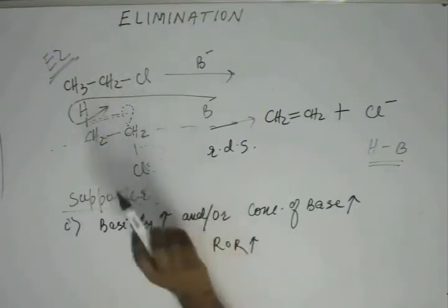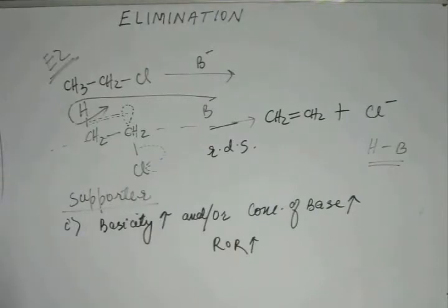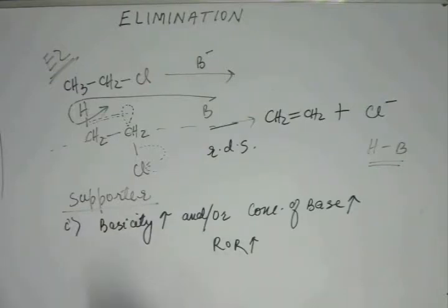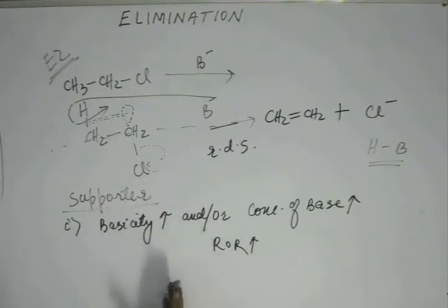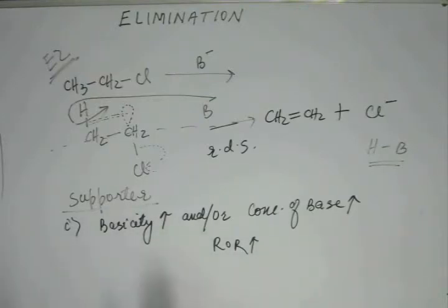If we increase basicity or increase the concentration of base, both will increase the rate of reaction, because this is a bimolecular reaction and base appears in the RDS. We understood why this alters the rate when we studied SN2. In SN2, the nucleophile appeared in the RDS, so increasing nucleophile concentration increased the rate. Here, we have base instead of nucleophile — increasing base concentration likewise increases the rate of E2.